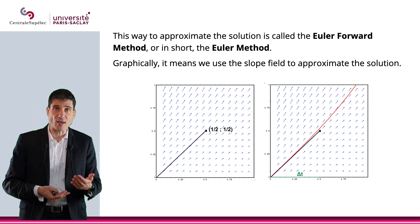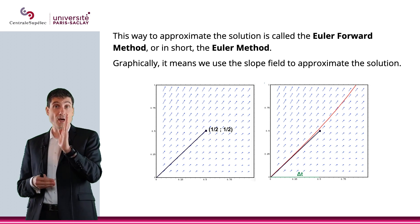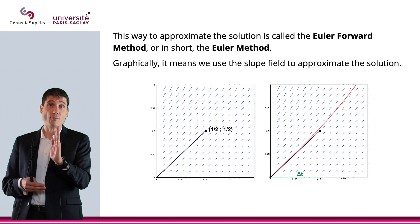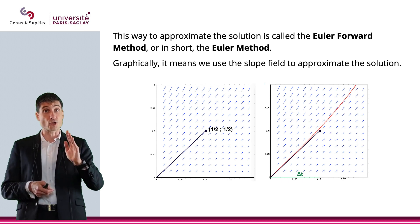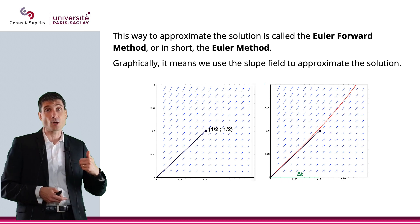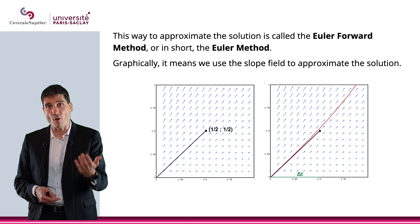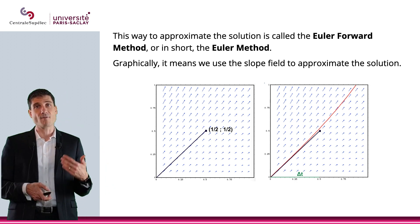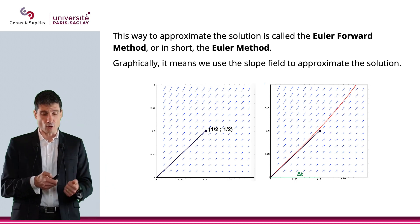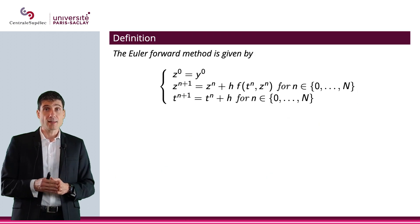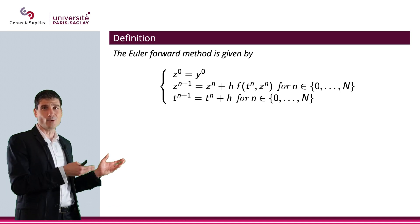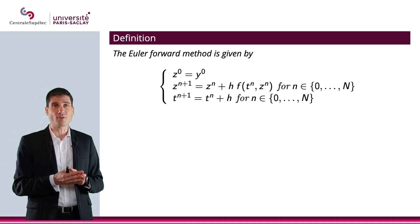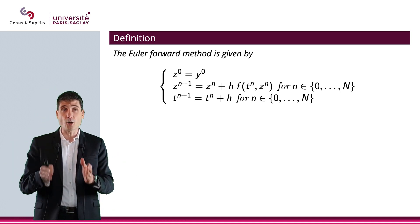And then you keep doing that. At that point, you have an approximation of your function. Then you're going to say, okay, I know the point, I know the slope, and then I'm going to go another step forward to compute the next value. That is the Euler method.